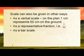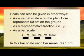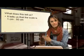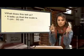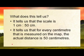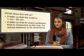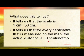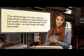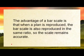Or you can have a bar scale, and a bar scale looks like this. In this bar scale, each bar measures 1 centimeter. What does this tell us? Essentially, it tells us that the scale is 1 centimeter to 50 centimeters — that 1 centimeter on the map, if you measure it with your ruler, equals 50 centimeters on the ground. It tells us that for every centimeter measured on the map, the actual distance is 50 centimeters. The advantage of a bar scale is that when a plan is reproduced, the bar scale is also reproduced in the same ratio, so the scale remains accurate.